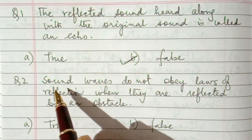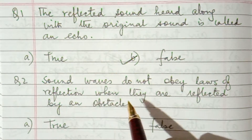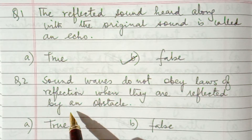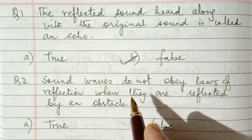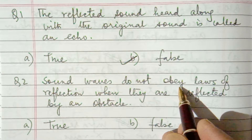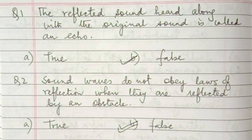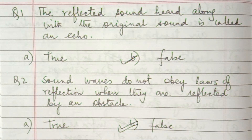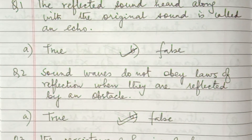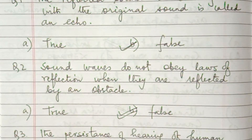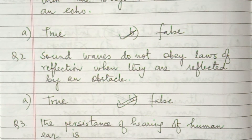Question number 2: sound waves do not obey the laws of reflection when they are reflected by an obstacle. This is also false because sound waves do obey the laws of reflection — that is, the angle of incidence is equal to the angle of reflection. So this law is obeyed by sound waves.